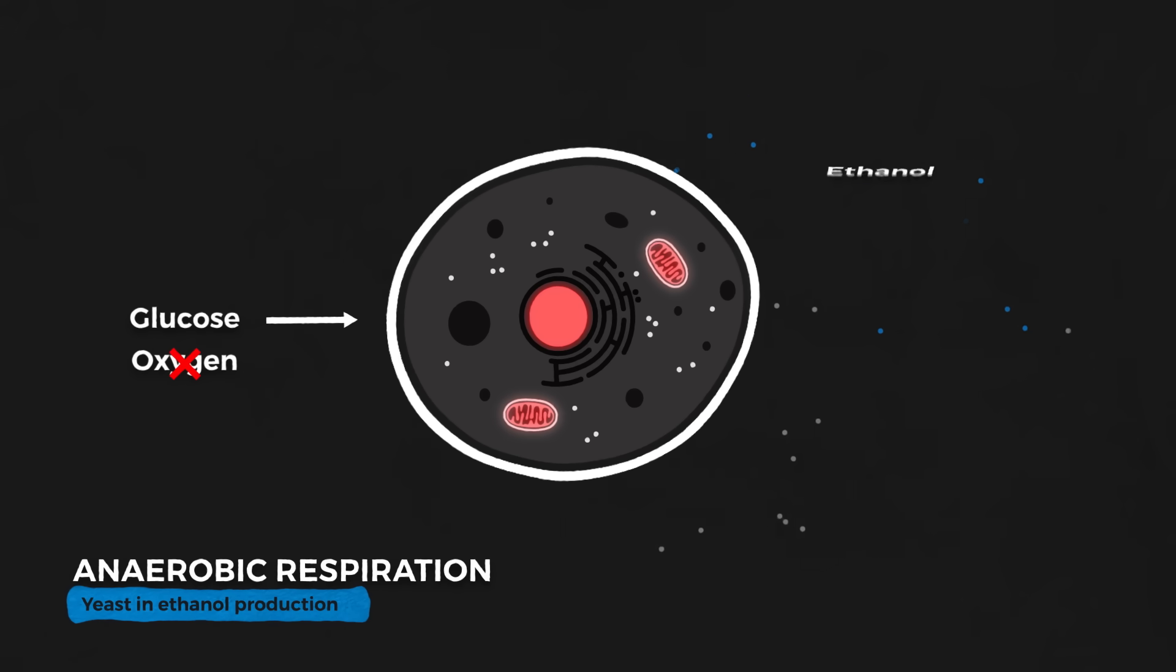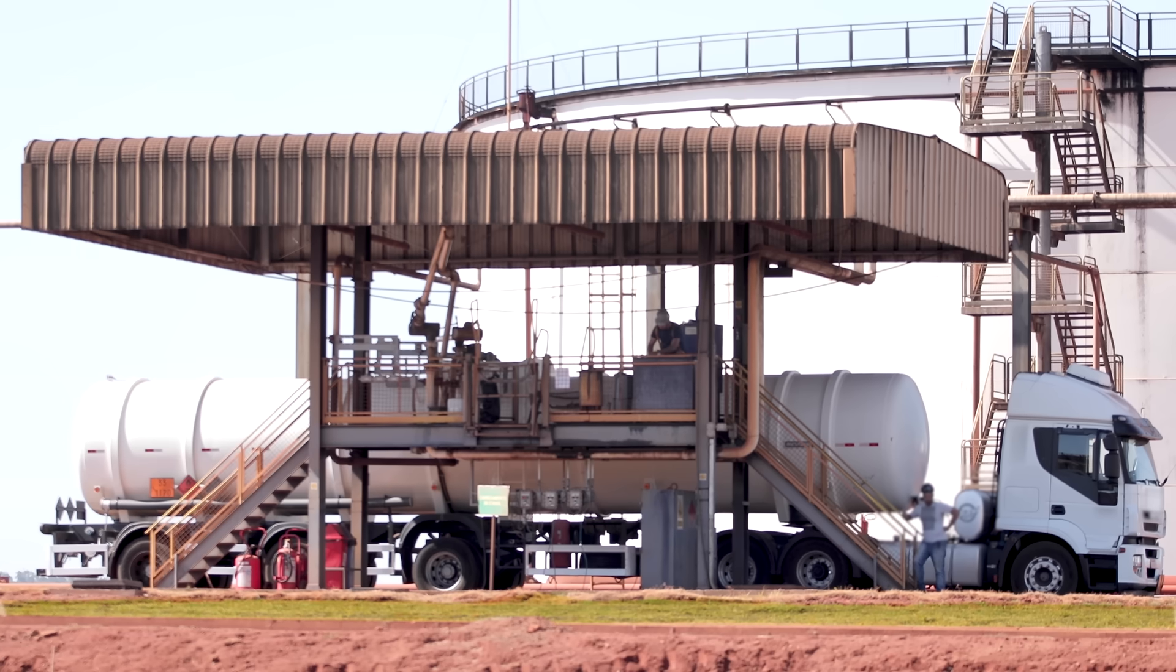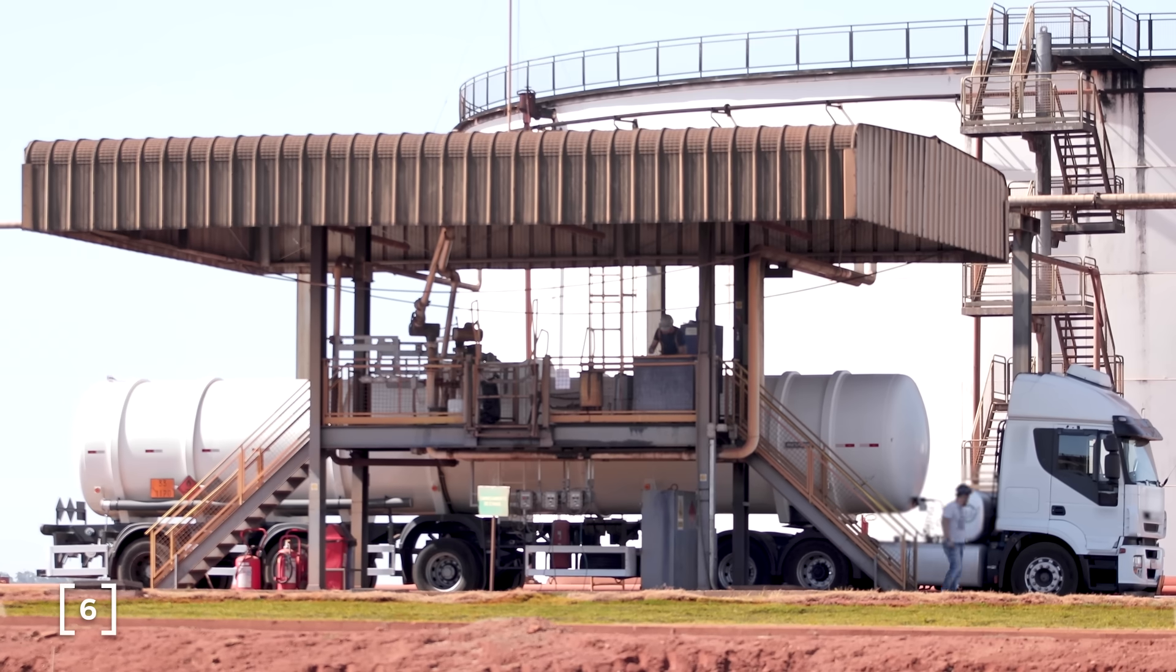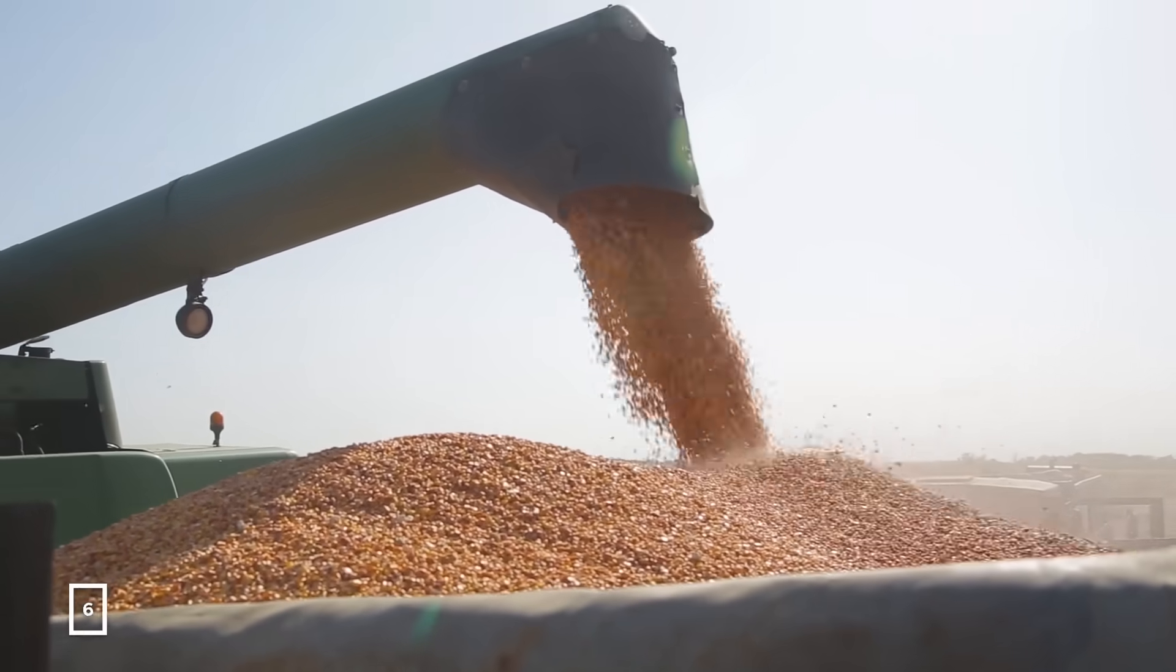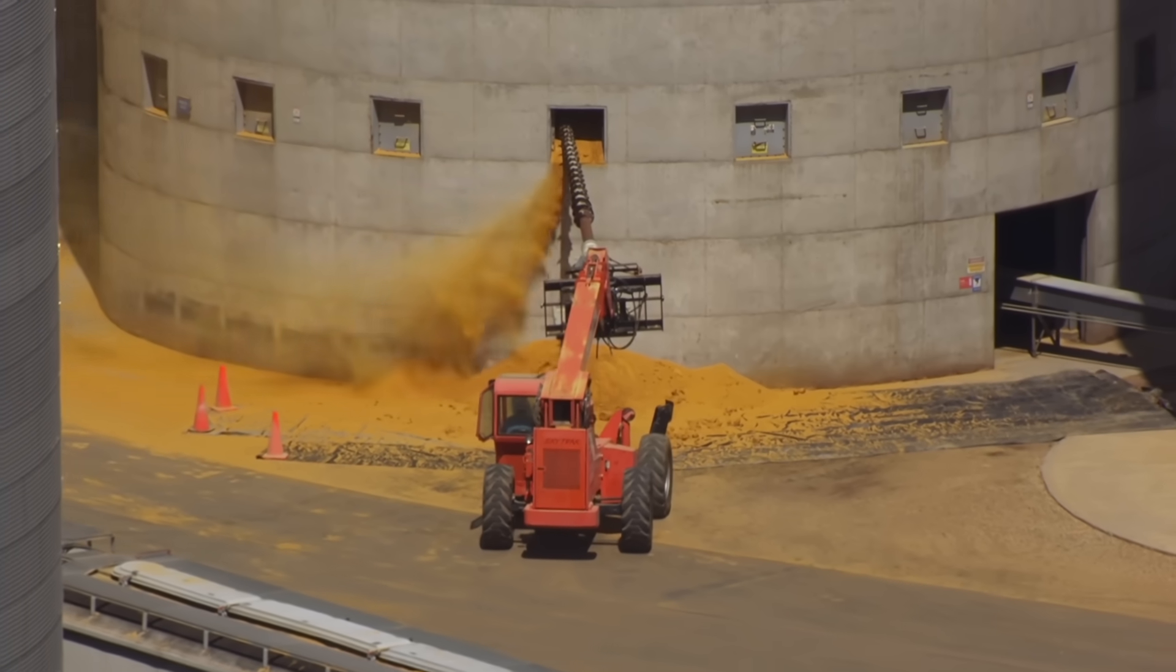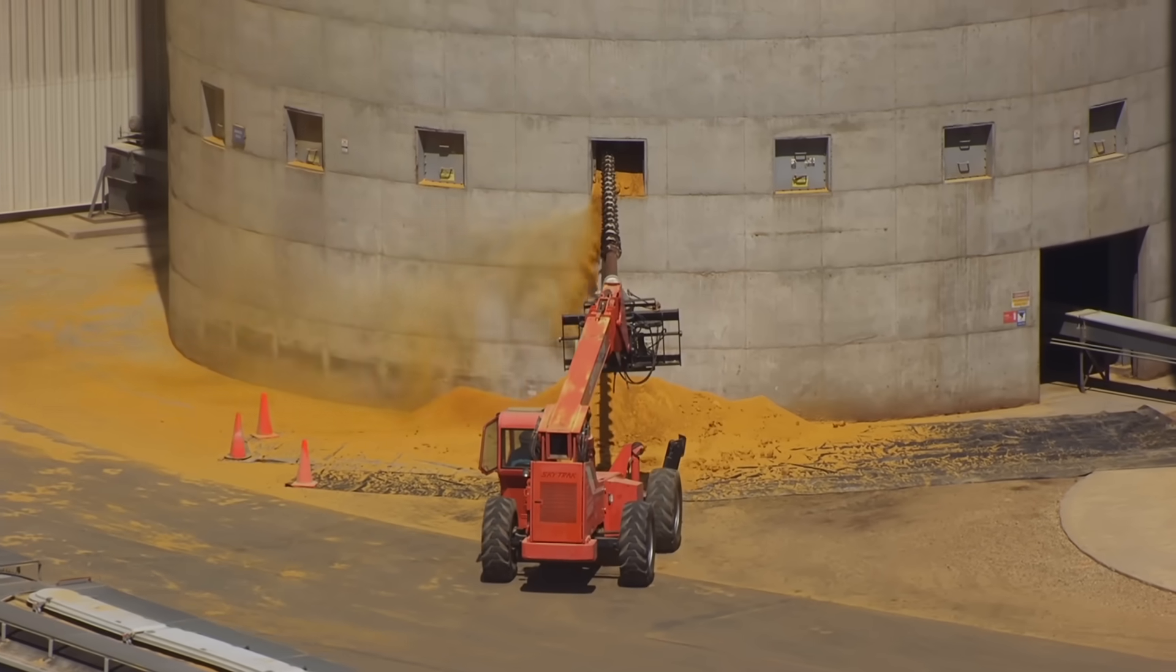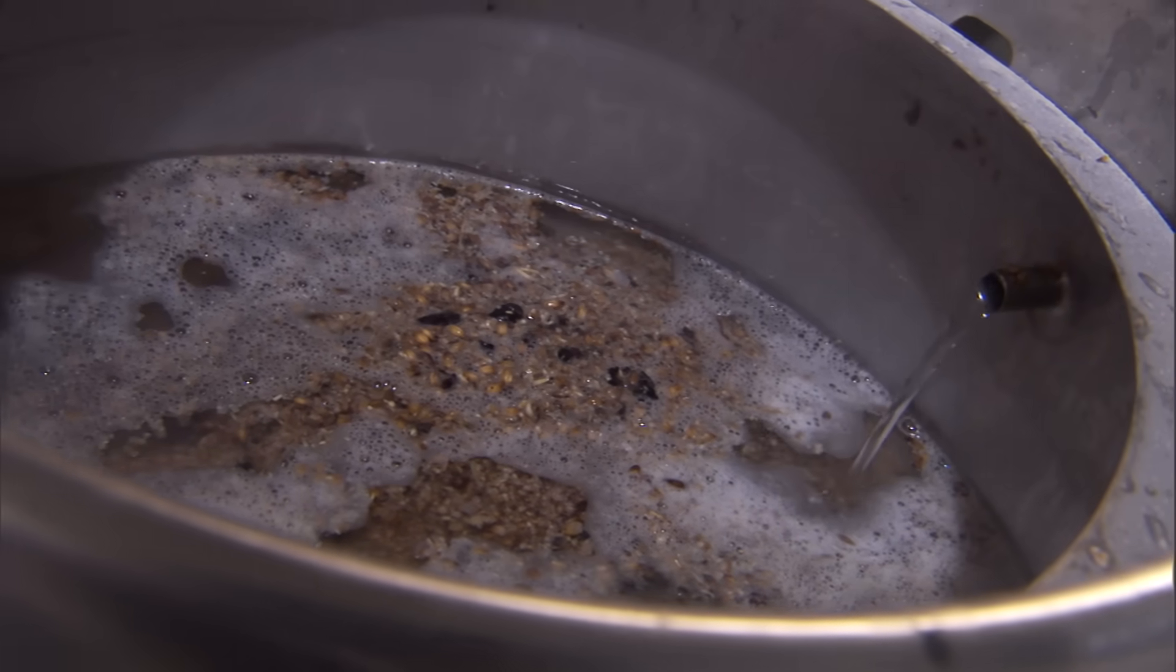When deprived of oxygen, yeast and bacteria use an anaerobic form of respiration where instead of converting sugars to energy and carbon dioxide, they convert it to energy and ethanol. The United States is the largest producer of bioethanol thanks to its abundant supply of corn and the quantity is rising. The production process isn't terribly complicated. The corn is simply ground into a flour and used as a feedstock for our microbial friends to turn into ethanol. What we need to worry about is all the extra steps needed before and after this.